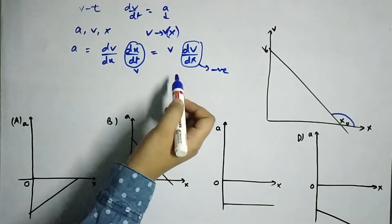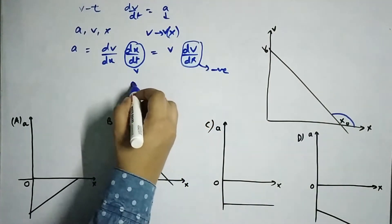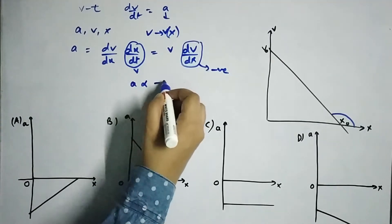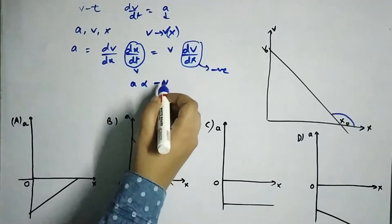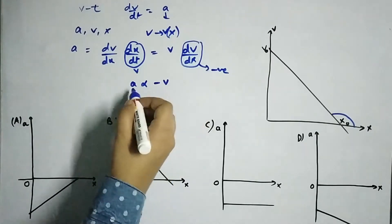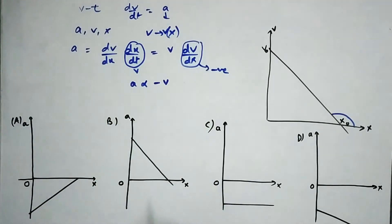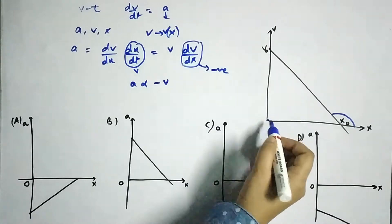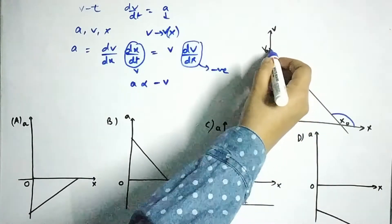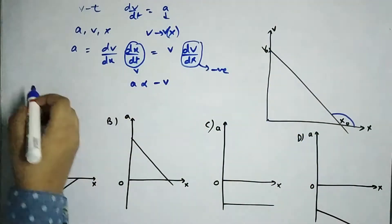And if this slope is negative, so a will be directly proportional to minus v. So whatever v I have, a will be just the negative of it. So I can say at x equals zero, v is zero, v is v0.